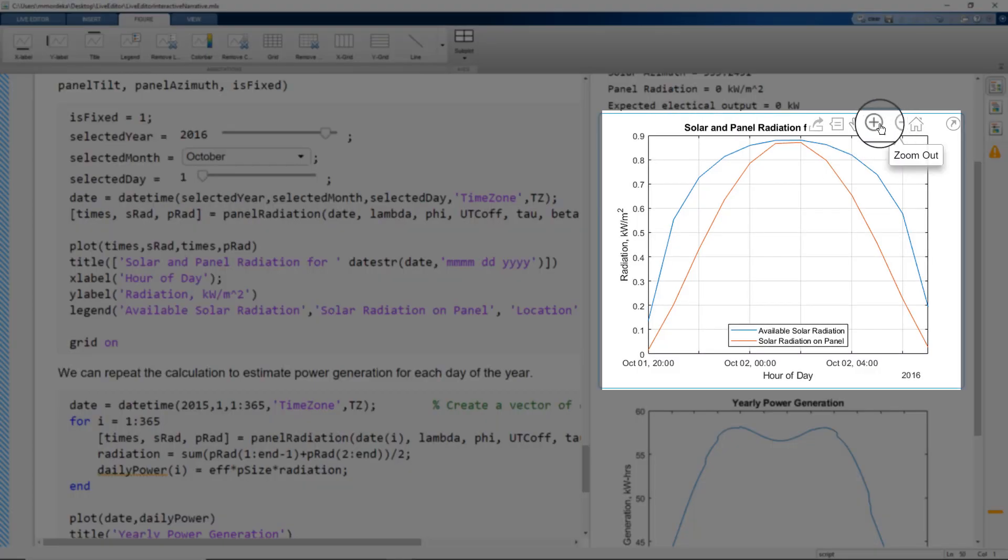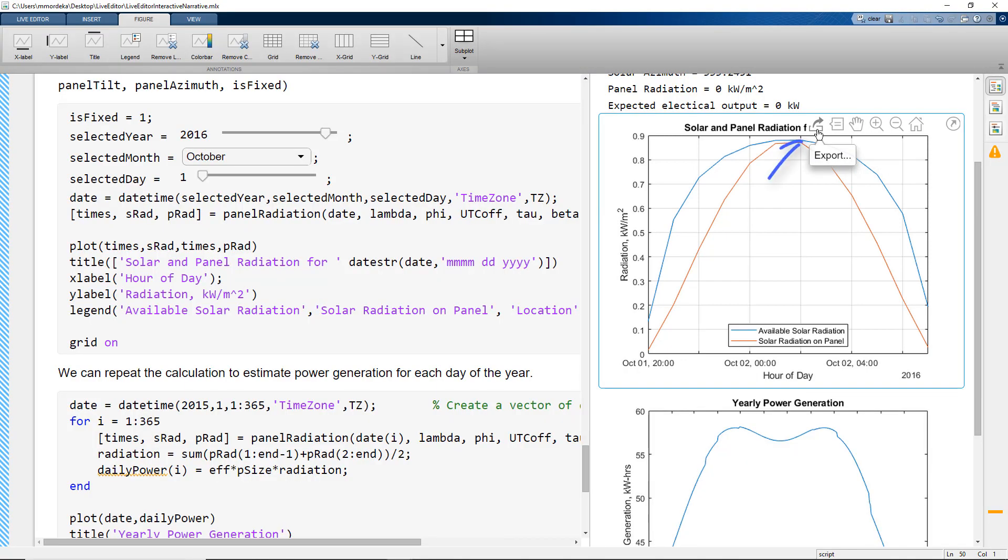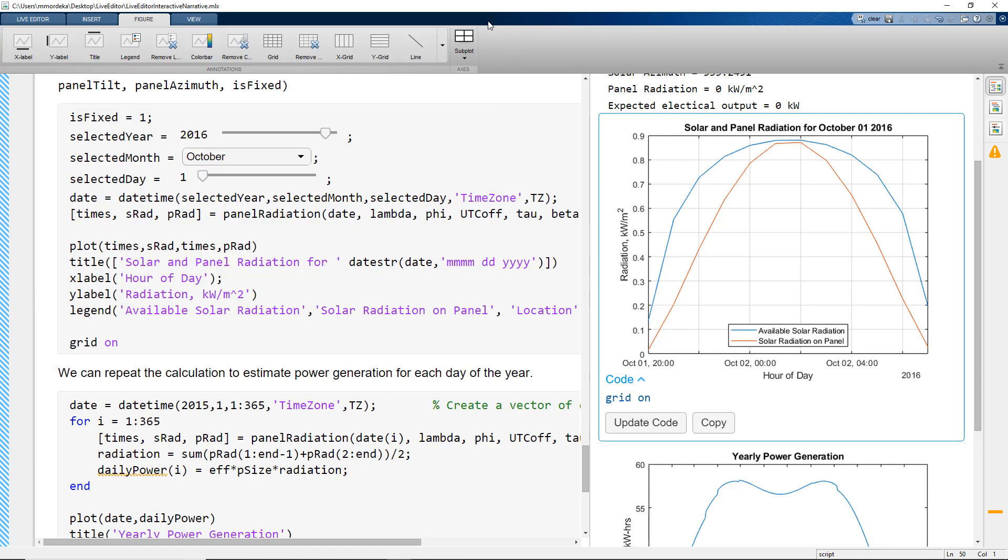We can zoom, pan, and add data cursor. You can also export the figure which is what we commonly do. But what if we can generate a report-like document directly from the Live Script?